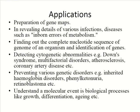Practical applications of recombinant DNA technology include preparation of gene maps to determine if certain genes are present in microbes or organisms, revealing details of various infections and diseases such as inborn errors of metabolism, finding the complete nucleotide sequence of a genome, and identifying genes. It is also useful in detecting cytogenetic abnormalities including Down syndrome, multifactorial disorders, atherosclerosis, and coronary artery disease, as well as preventing genetic disorders including inherited hemoglobin disorders and phenylketonuria. It also advances understanding of molecular events and biological processes like growth, differentiation, and aging.